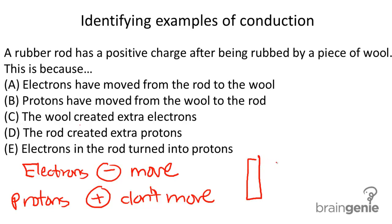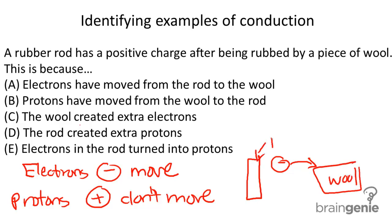So this is the rubber rod. Electrons are leaving the rubber rod and going on to the piece of wool. So therefore, electrons have moved from the rod to the wool.